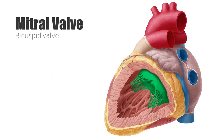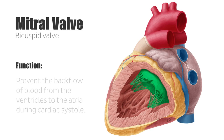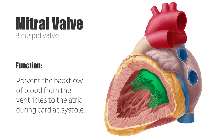The valves of the heart control the blood flow in and out of the heart. Specifically, the atrioventricular valves function to prevent the backflow of blood from the ventricles to the atria during cardiac systole. Opening and closing of the valves is governed by the gradient pressure across the valves themselves.